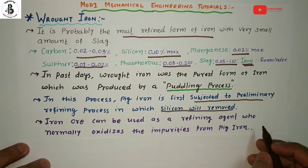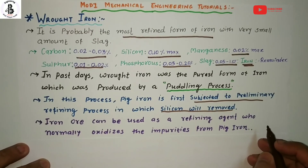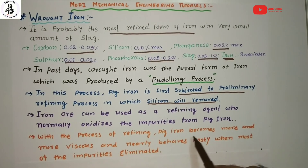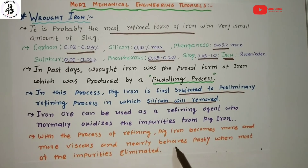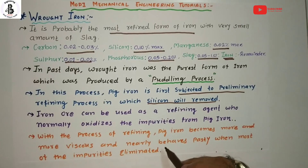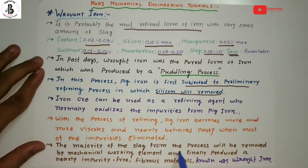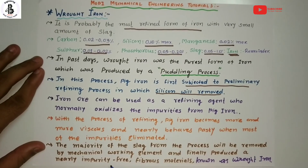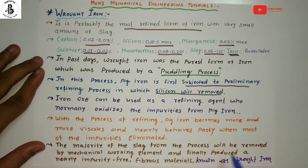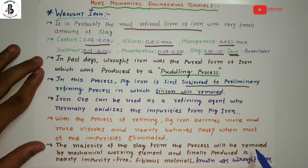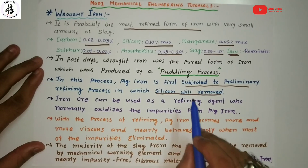We have already covered pig irons previously — you will find a link in the description box. With the puddling process, the refining pig iron becomes more and more viscous and behaves partially solid when most of the impurities are eliminated. The majority of the slag is then removed by mechanical working, and finally a nearly impurity-free fibrous material is produced, which is known as wrought iron. So basically, wrought iron is produced from pig iron by the puddling process.